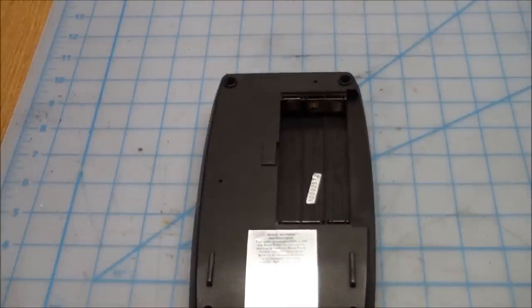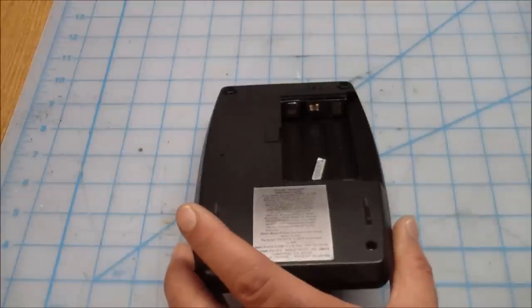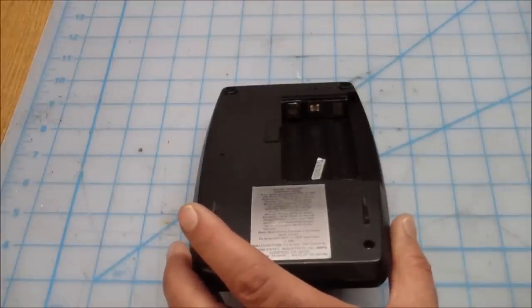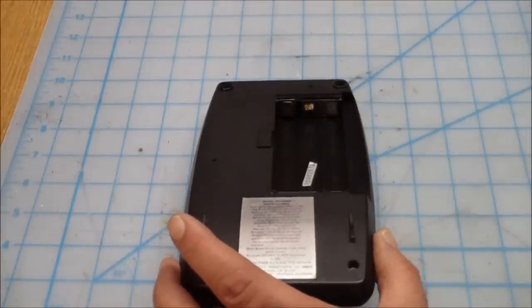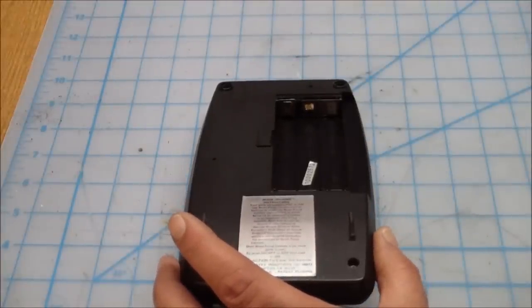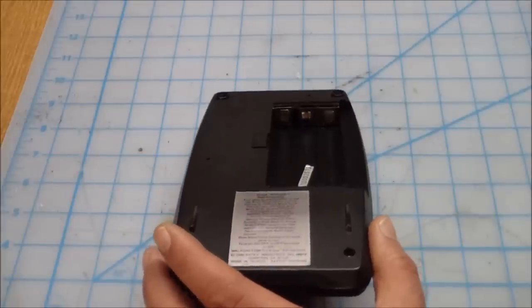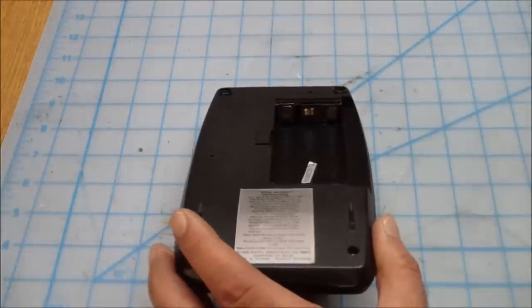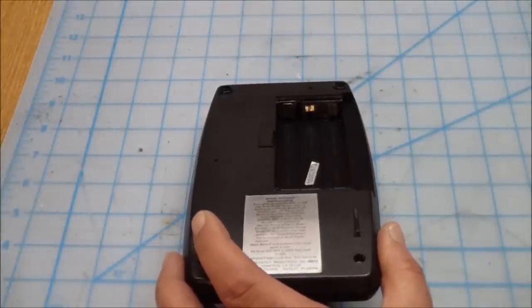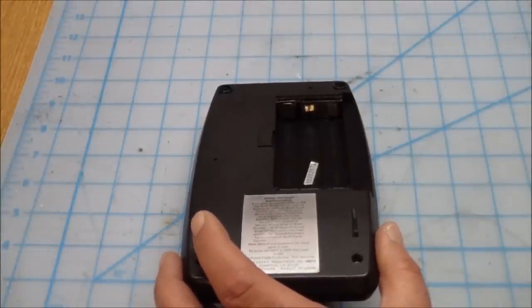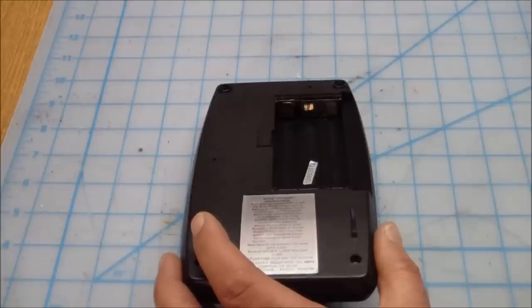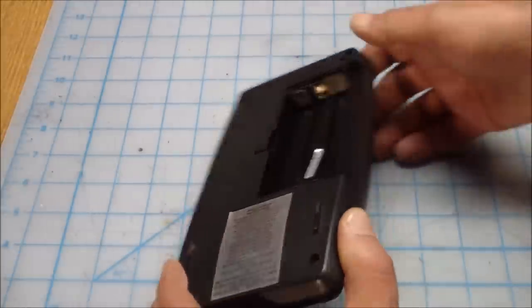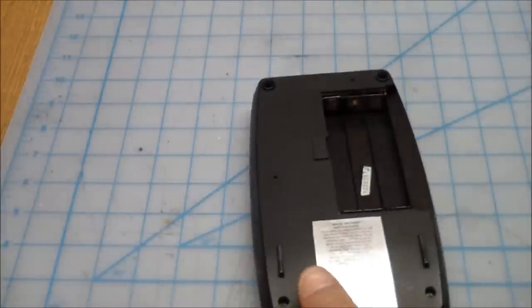It cleaned up nicely, but this doesn't always happen depending on how long the battery was leaking and if it was in a moist environment. It will usually attack the contacts, and if the contacts start breaking off there's really not a lot you can do. But in this case we were lucky. So let's put some batteries in.